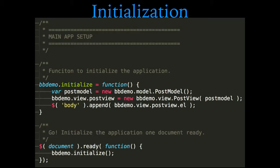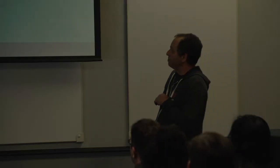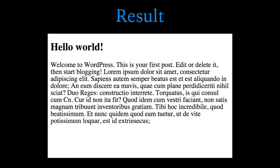Here's the final slide of this demo — just the initialization. We create a new model: postModel equals new PostModel. Then a view equals new PostView — we pass the post model through. It's going to fetch as soon as we do that, and then we append that view to the DOM. That's it. All it does is display one post. It's a lot of code for one really simple thing, but what I'm trying to show you is how these different pieces fit together.